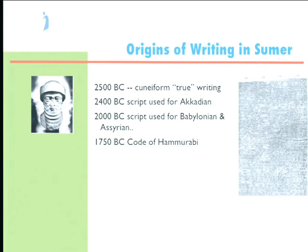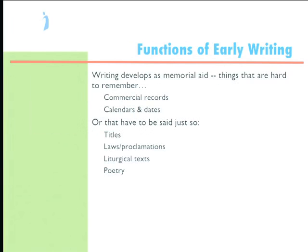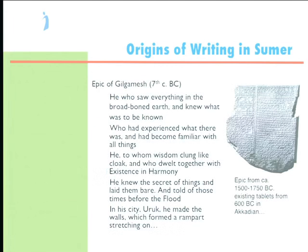It was borrowed for Babylonian and Assyrian, and by 1750 BC was used for the Code of Hammurabi — the first code of laws. What do you want to write in a society like this? You keep commercial records — important if there's a dispute. Calendars and dates are enormously important for agricultural seasons and repeated rituals. Titles, like King of Kings, have to be said in exactly the right way. Laws and proclamations, where each word matters. Liturgical texts — prayers and religious texts. Poetry too: by the 7th century BC, you have the Epic of Gilgamesh written in Akkadian cuneiform. By this time, writing is being used for a wide range of things, though not yet filling all the roles it fills in a fully literate society like our own.